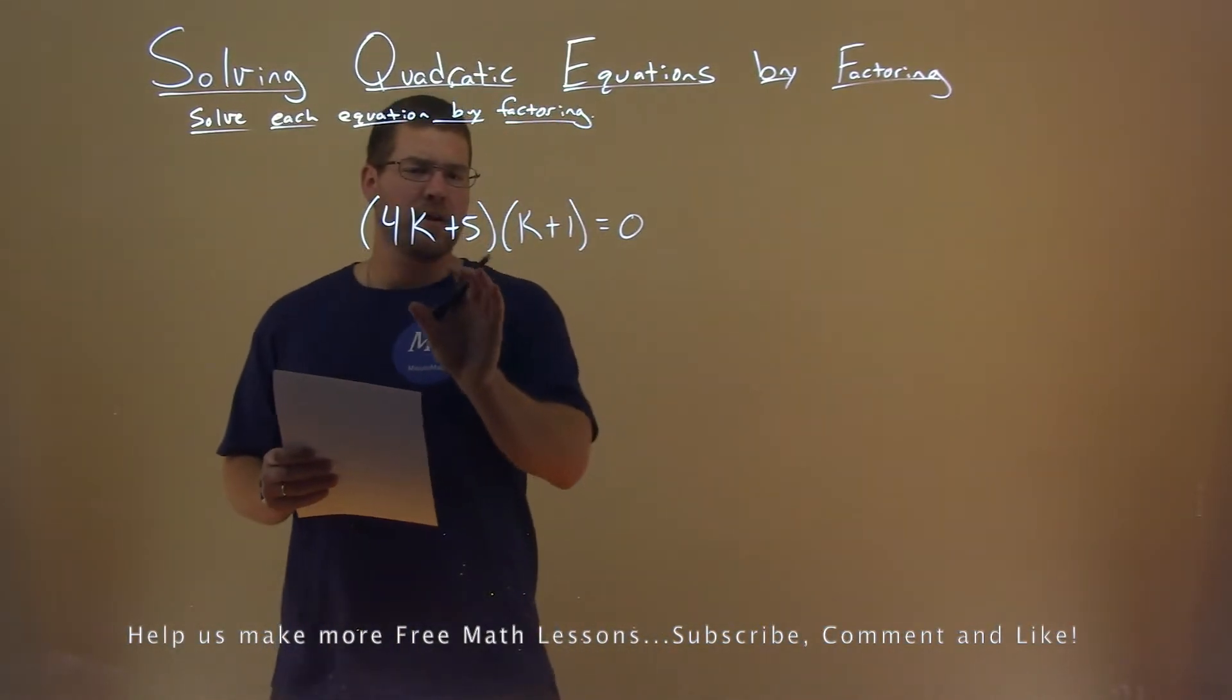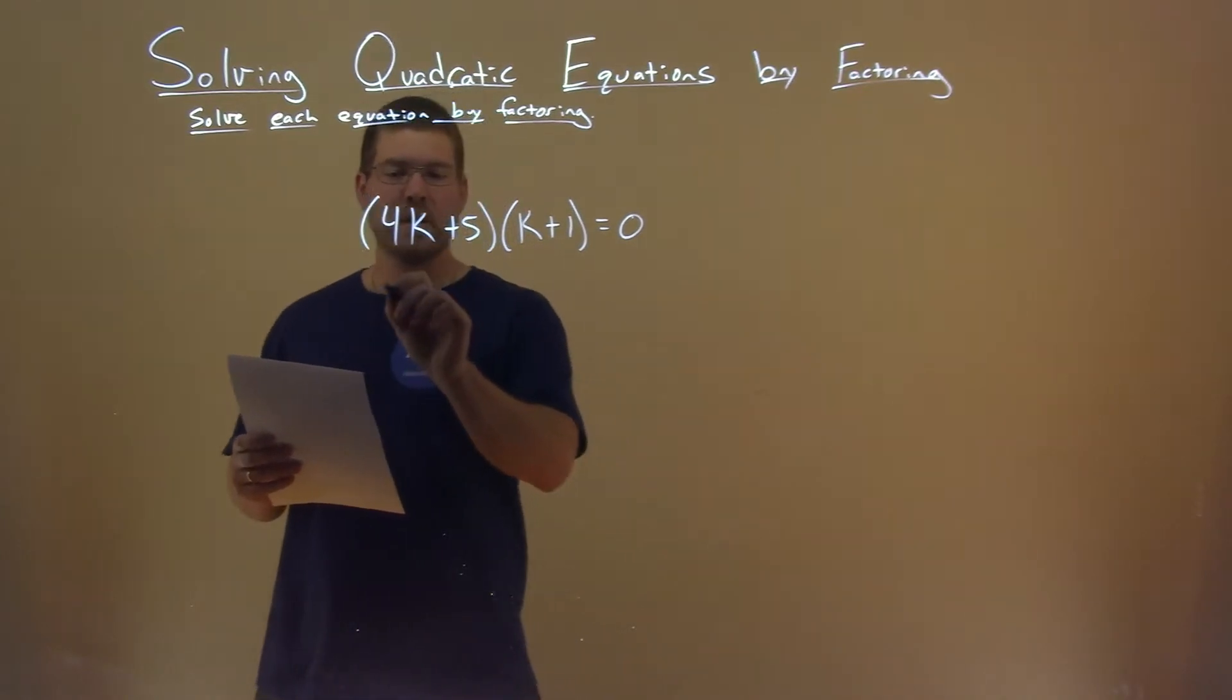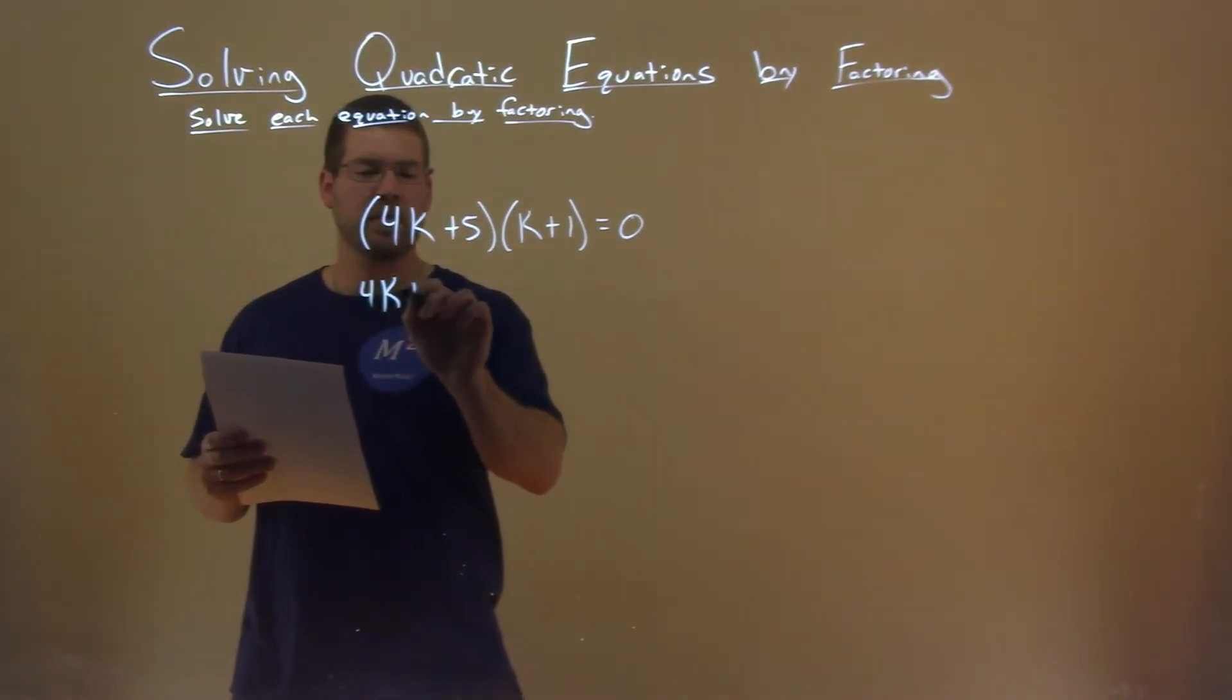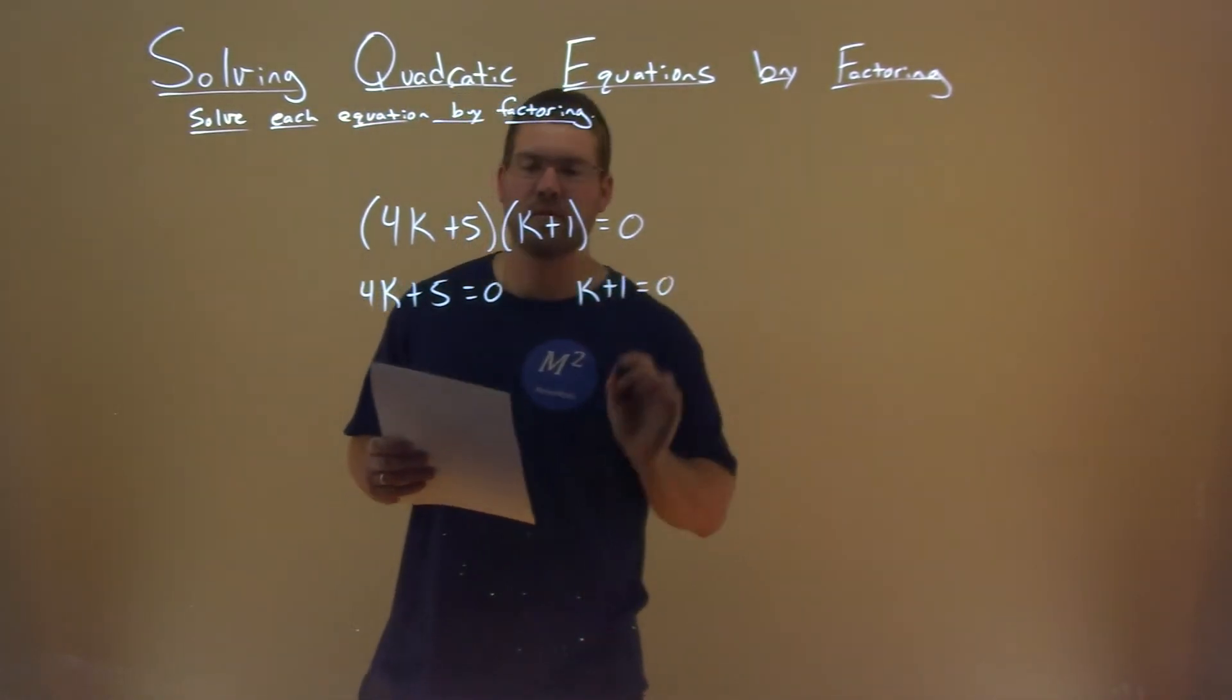Well, first thing I notice is that this is already in factored form. So, because of that, we can set both parts here. 4k plus 5 equal to 0, and k plus 1 equal to 0.